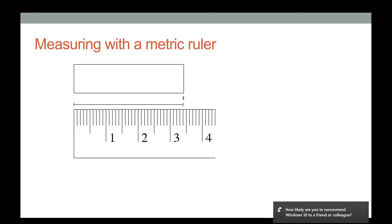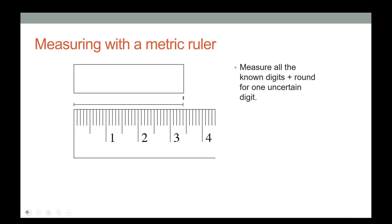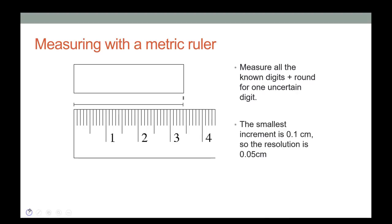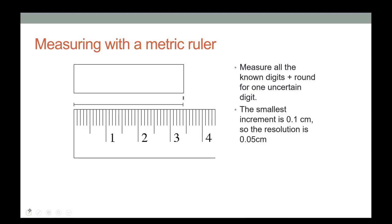Measure all the known digits and round for the first uncertain digit. To do that, we need to identify the resolution — to know where to put that uncertain number.